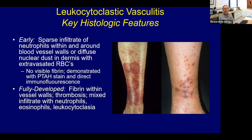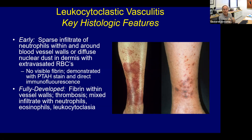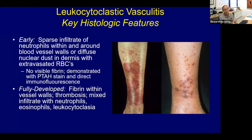Leukocytoclastic vasculitis — you need to know everything about this. There are many classifications: small vessel, medium-sized vessel, large vessel, granulomatous, and thrombotic vasculitis. LCV examined very early shows a sparse infiltrate of neutrophils and nuclear dust with or without fibrin. Later you see fibrin deposited within blood vessel walls, thrombosis with a mixed infiltrate of neutrophils, eosinophils, and leukocytoclasia. The classic clinical presentation is palpable purpura — though not everything palpable purpura is vasculitis.